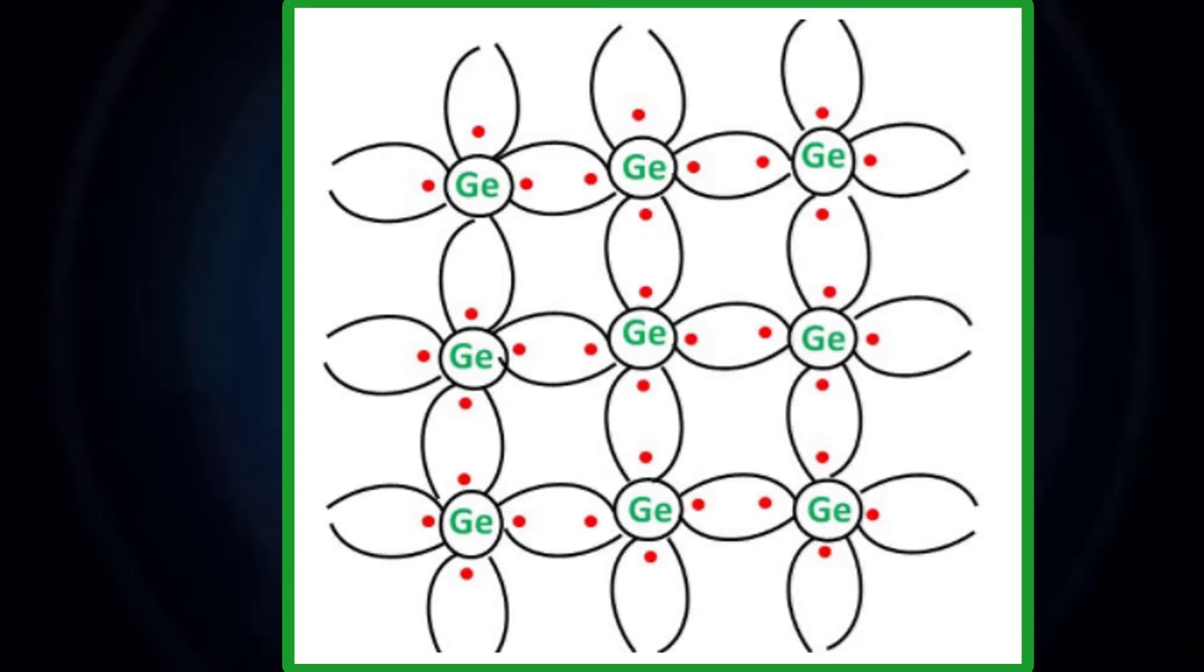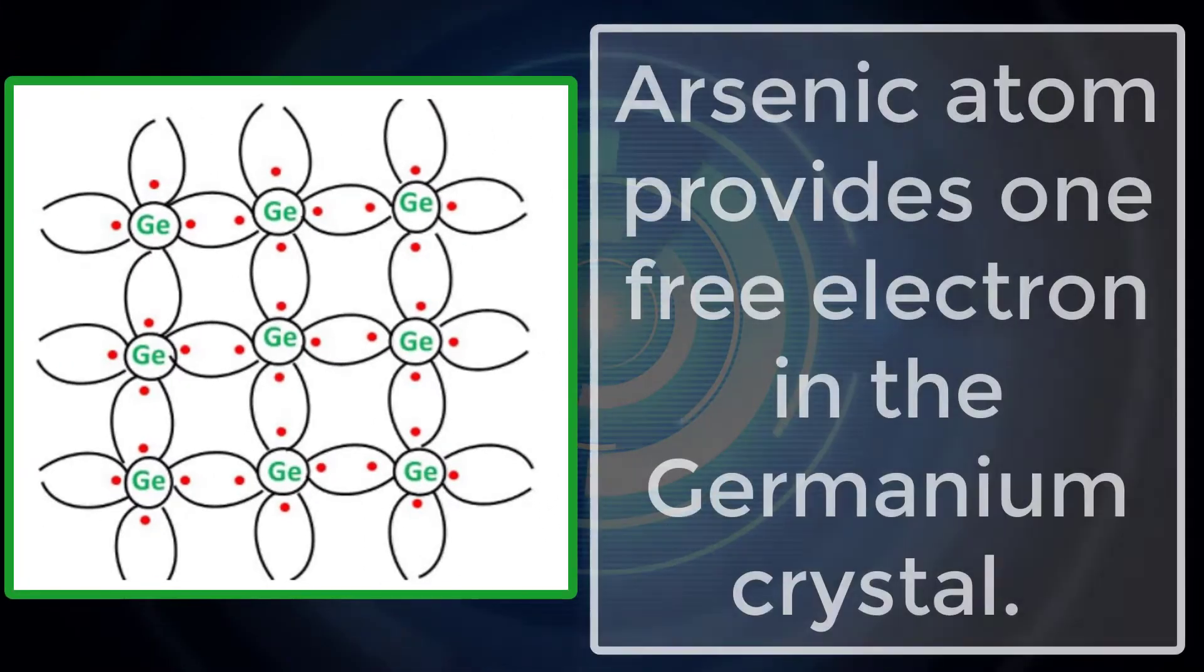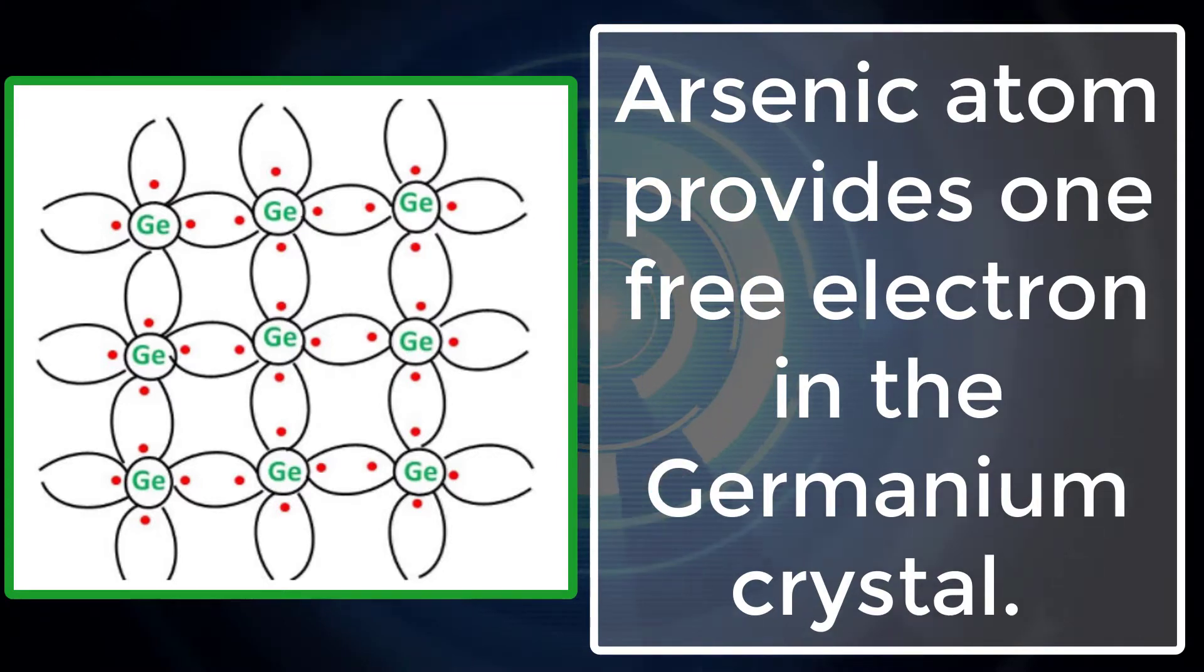Each atom of the impurity fits in four germanium atoms as shown in the figure. Hence, each arsenic atom provides one free electron in the germanium crystal.